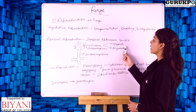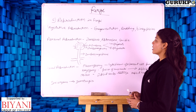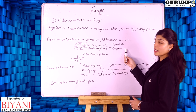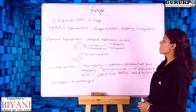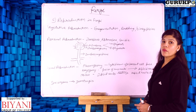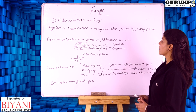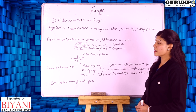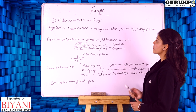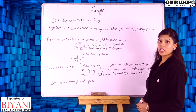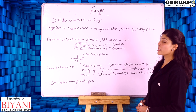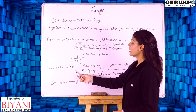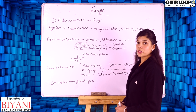In zoospores there are two types of flagella: uniflagellate and biflagellate. In uniflagellate, only one flagellum is present, and in biflagellate, two flagella are present. All these spores germinate in favorable conditions and produce new mycelium.